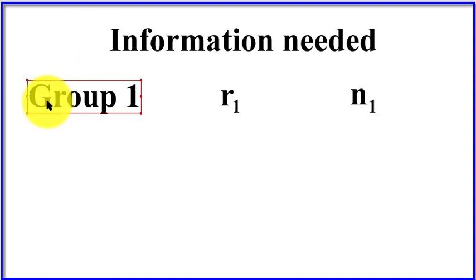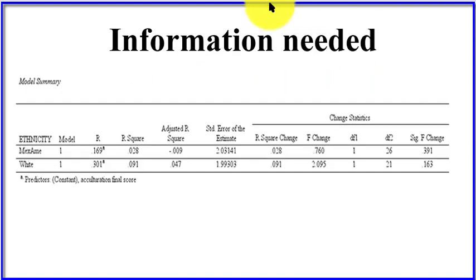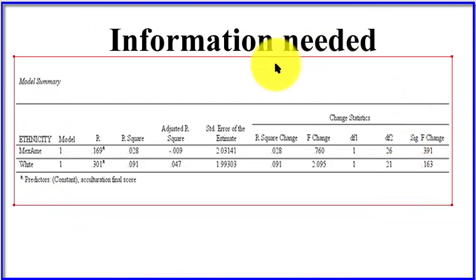The information that you need: from your first group, you need the correlation and the sample size. Same from the second group. The little ones and twos, those are simply indexes—they tell me which group they're connected to.